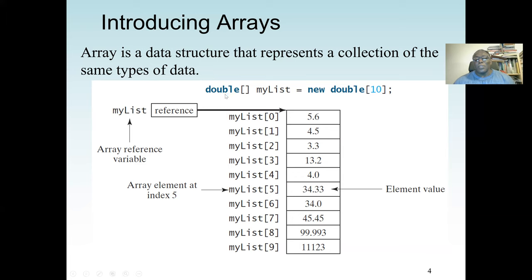How do we declare an array? We have an array named myList. We use open and close square brackets, then the data type — here it is double — which means we can only store decimal numbers. The size of this array is 10. The syntax starts with the data type, open and close square brackets, the array name myList, then the new keyword to dynamically allocate memory space, and the size 10.